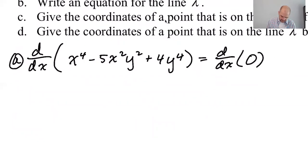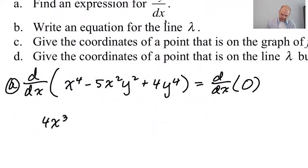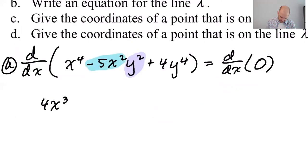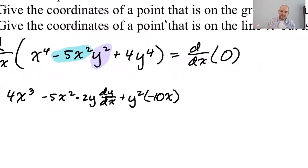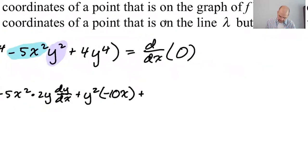On this side, the derivative of x to the fourth is 4x cubed. I think of the first function as negative 5x squared and the second function as y squared. What that does is it prevents me from not correctly distributing a negative sign — you always want to watch out for that. So: first times derivative of the second is 2y dy/dx, plus second times derivative of the first, which is negative 10x. By grouping them that way I don't fall into the trap of missing the negative sign after the product rule.